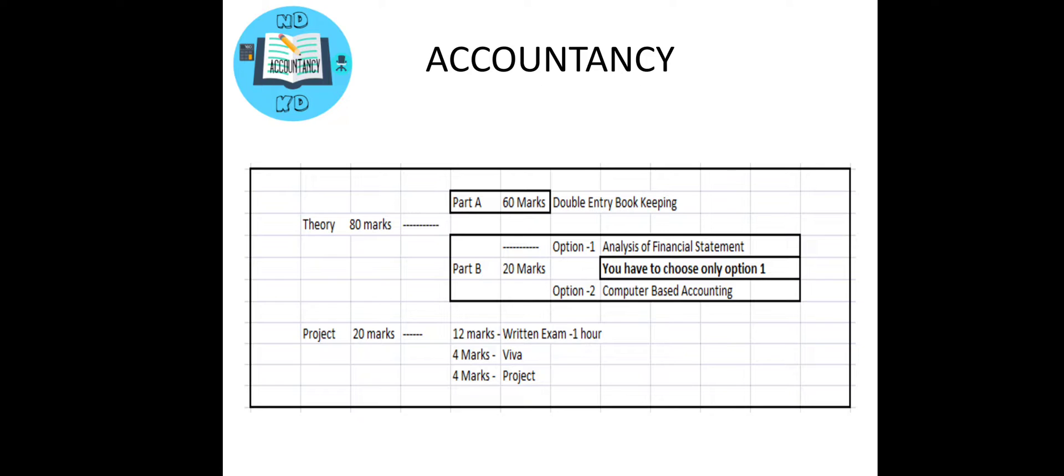Option 1 is Analysis of Financial Statement, and Option 2 is Computer Based Accounting. We are going to ignore the Computer Based Accounting and only opt for Analysis of Financial Statement, which is Option 1 and contains 20 marks.